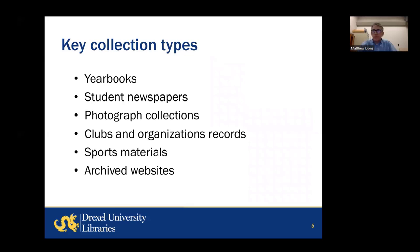Now, to say a little bit about the different kinds of collection materials at Drexel University Archives that are particularly helpful for revisiting one's time on campus. In order to keep this presentation manageable, I decided to focus on six different types of materials: yearbooks, student newspapers, photograph collections, the records of clubs and organizations including fraternities and sororities, sports-related materials, and archived websites. Now I'm going to look at each of these six types in order.